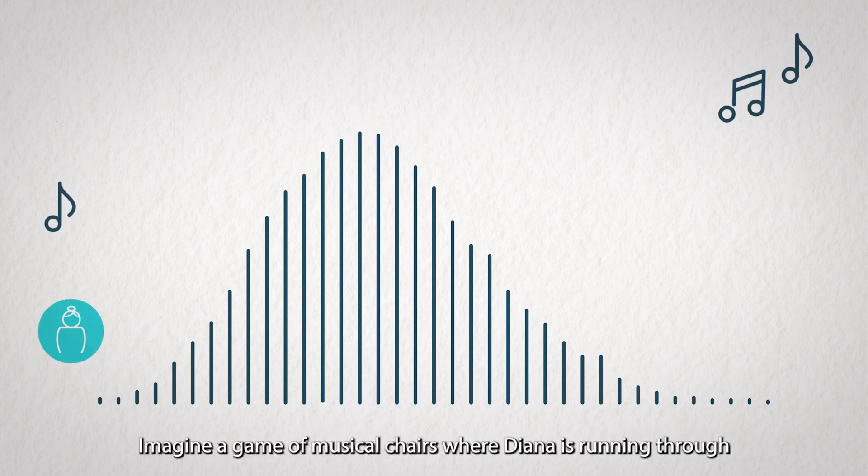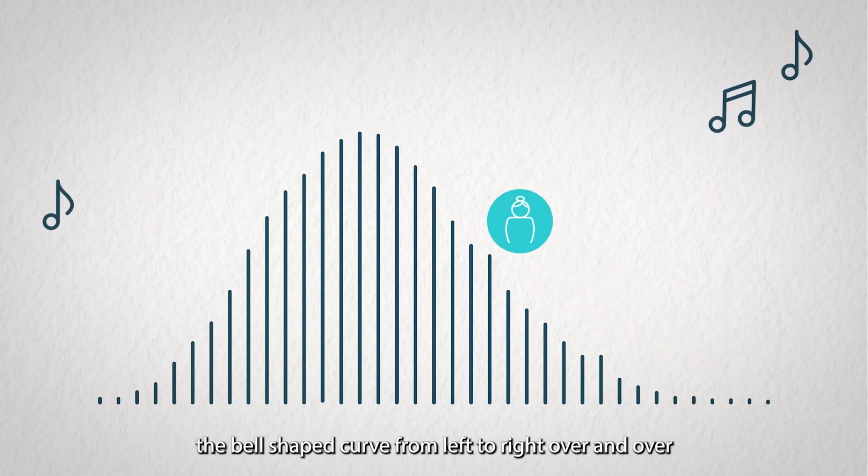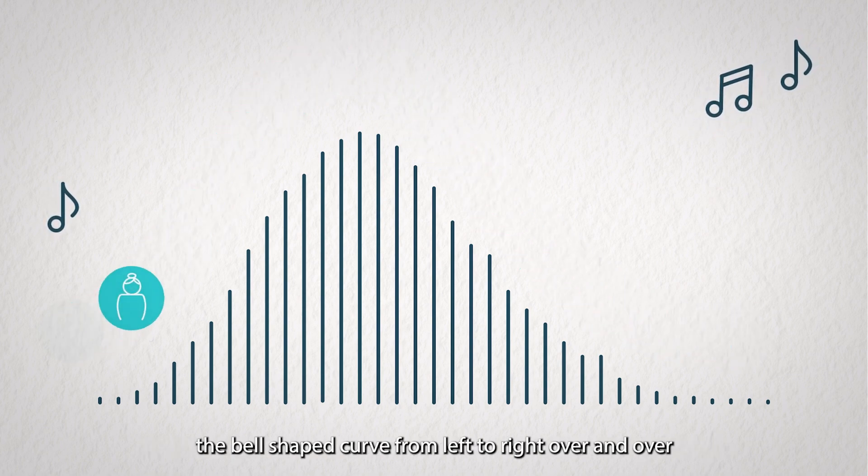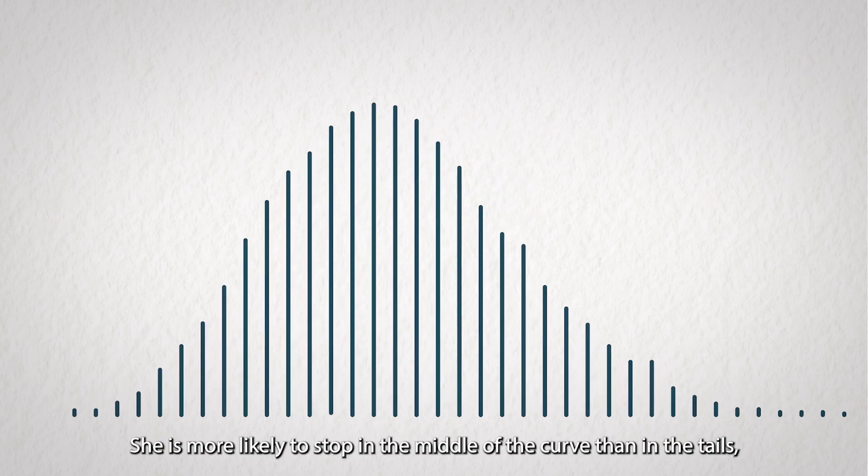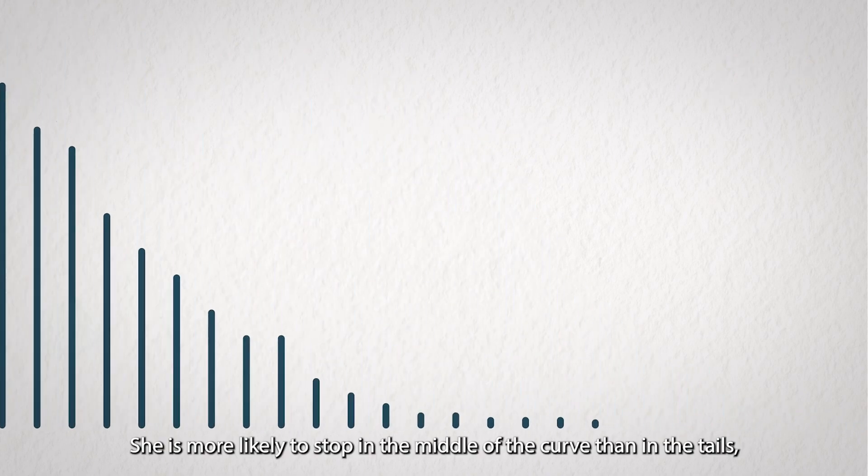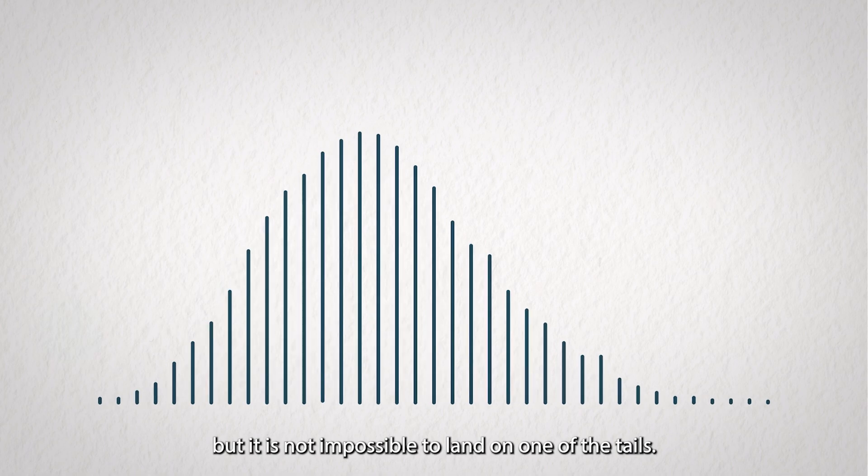Imagine a game of musical chairs where Diana is running through the bell-shaped curve from left to right over and over until the music stops. She is more likely to stop in the middle of the curve than in the tails, but it is not impossible to land on one of the tails.